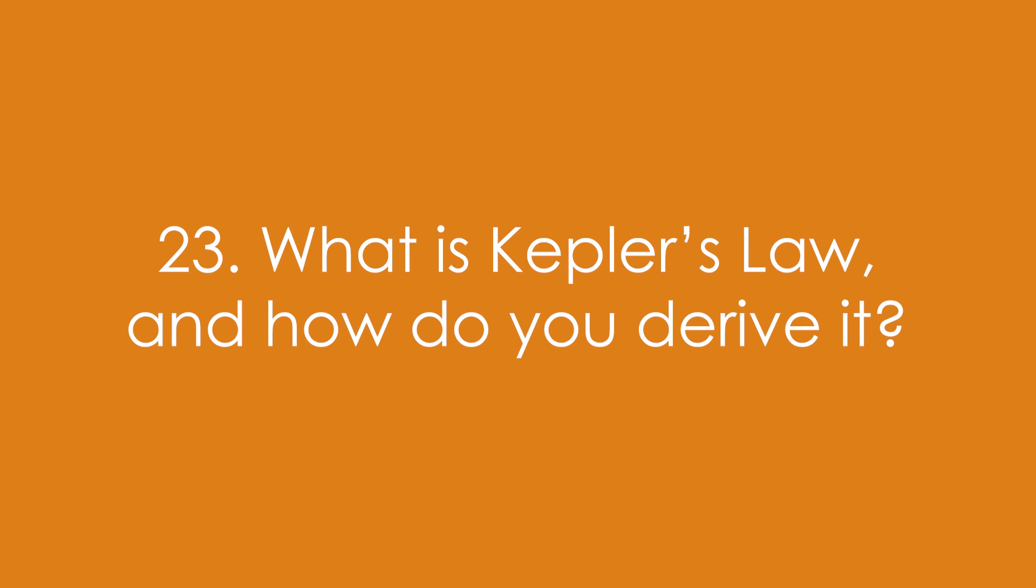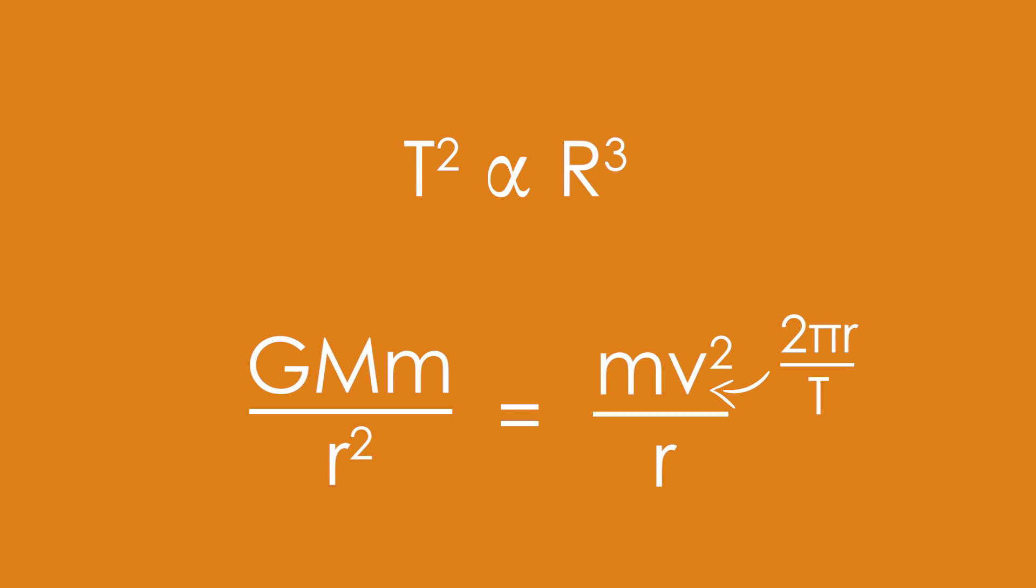Twenty-three, what is Kepler's law and how do you derive it? It's T squared is proportional to r cubed. And we get that from using what we just had, GMm over r squared equals mv squared over r, but we don't want v's in there, so we replace v with 2π r over T, circumference divided by time period. Rearrange, take out all the constants, and we just have T squared proportional to r cubed.